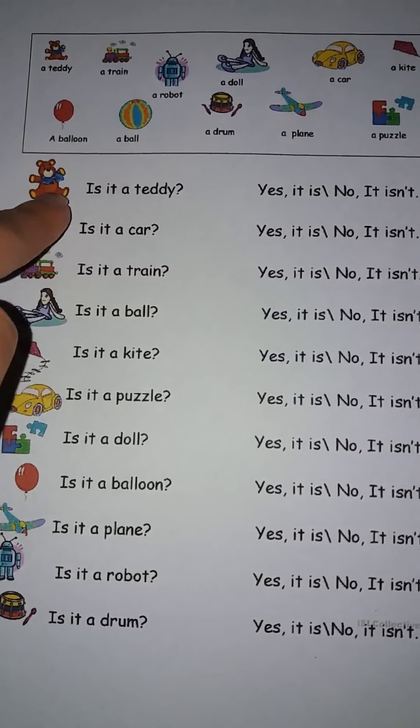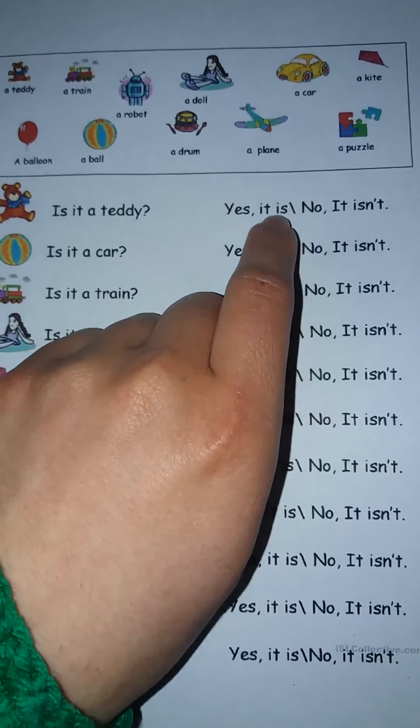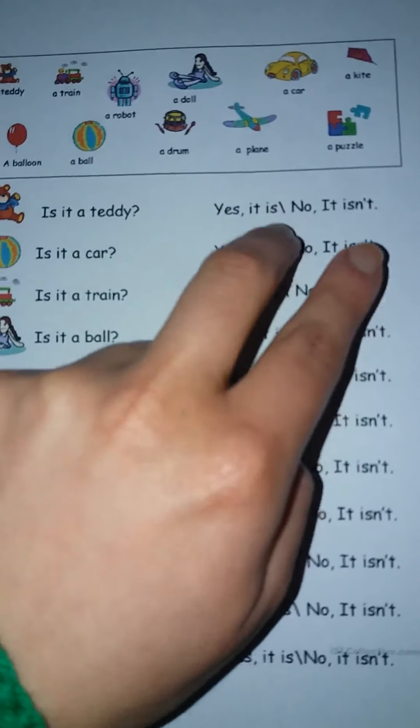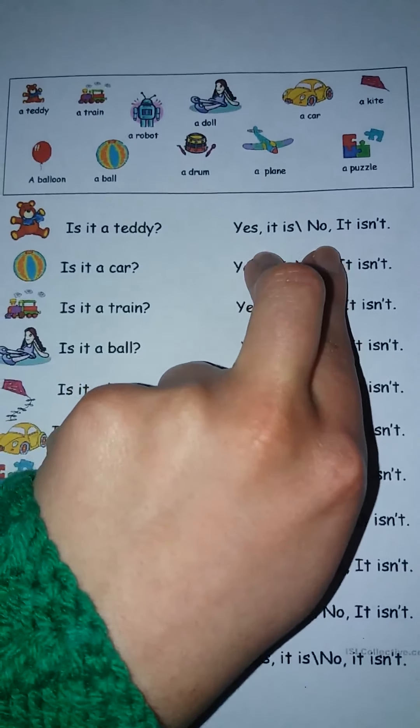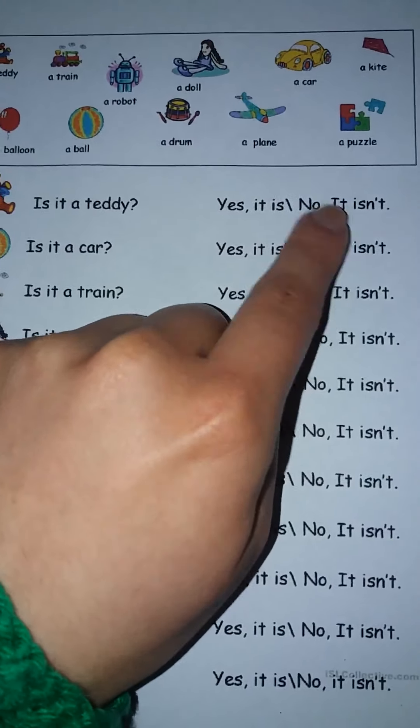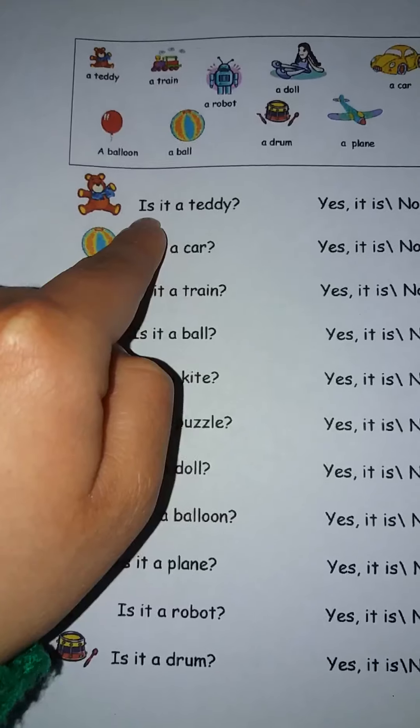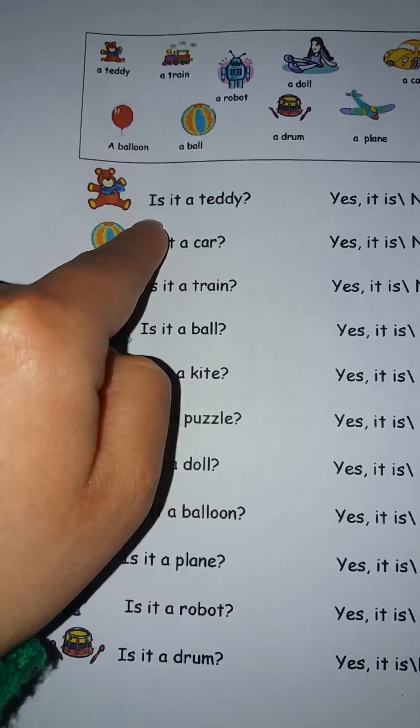And here we have the picture, a question, and two options of answers, ok? Tenemos una imagen, una pregunta, y dos respuestas posibles. La pregunta dice, the question says,